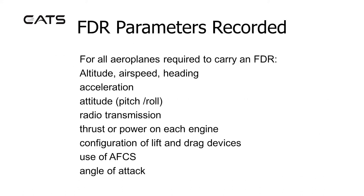FDR Parameters Recorded. For all aeroplanes required to carry an FDR: altitude, airspeed, heading, acceleration, attitude (pitch and roll), radio transmissions, thrust or power on each engine, configuration of lift and drag devices, use of automatic flight control systems, and angle of attack.